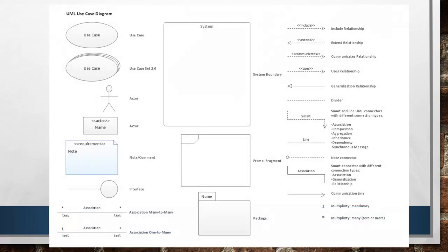Now let's look at some basic symbols of the use case diagram. Use cases are represented by an oval shape — you write the name of the use case inside the oval, and you can have multiple use cases in one diagram. The actor is depicted with a stick figure symbol. The whole system is shown inside a rectangle, with use cases placed inside the rectangle and actors placed outside the system boundary.